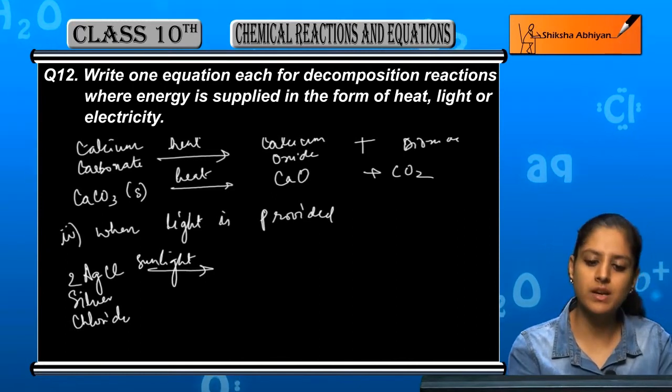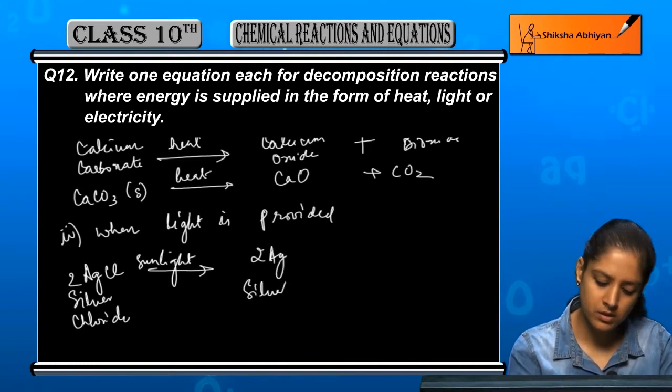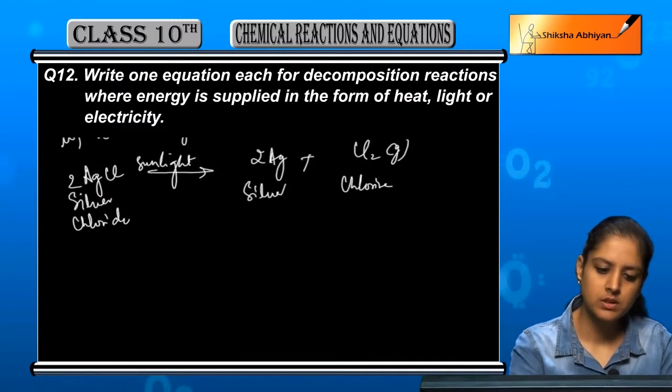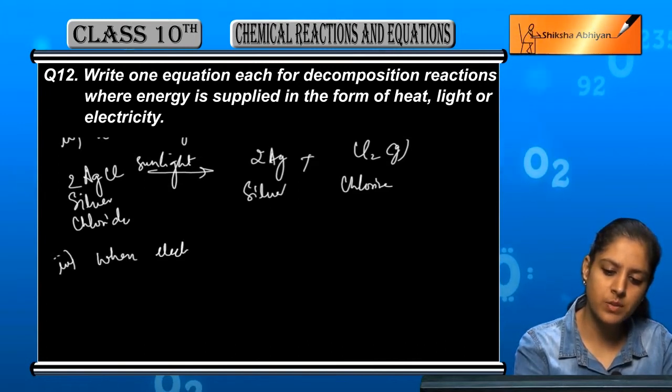In sunlight, silver metal and chlorine gas are formed. Now the third case is when electricity is passed.